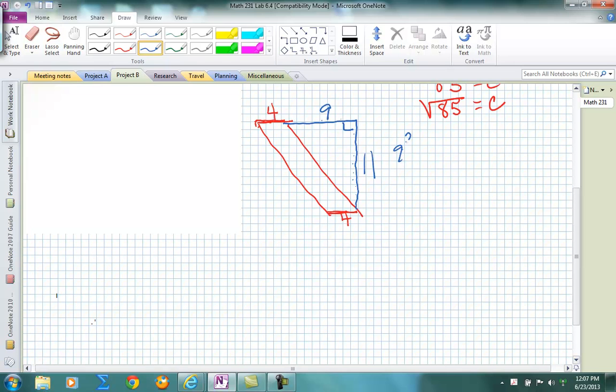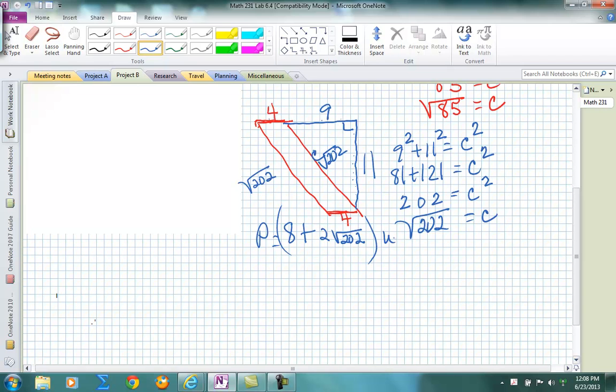Or 81 plus 121 is c squared. 202 is c squared. So the square root of 202 would be the length of this side. And so the perimeter would be 4 plus 4 or 8 plus 2 times the square root of 202 units. Now the area is base times height, which that's going to be easy for us to calculate because we simply have to count the height. The height is the vertical or the perpendicular path, which the height is 11 and the base is 4. So the area would be 44 units squared.